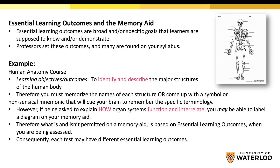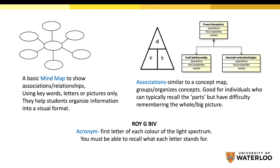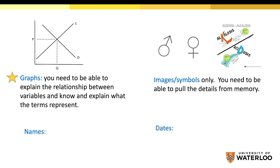Let's look at a few more examples of items that may be permitted on a memory aid sheet. A simple mind map that shows relationships between concepts using keywords or pictures only — you may use color and/or shapes for lines, arrows, and bubbles. A flow chart with basic terms to demonstrate the whole picture or whole concept as it relates to its parts, used to cue related associations of the parts to the whole. First-letter acronyms — for example, ROYGBIV stands for the visible colors of the light spectrum; note that you have to recall from memory what each letter stands for. A graph — note that you must explain the relationship between lines, variables, etc. You may also be permitted to use symbols, images, names, and dates.